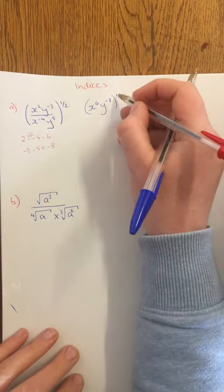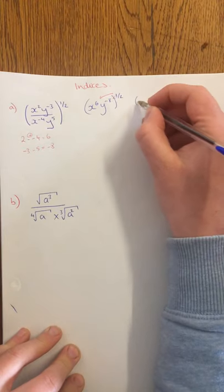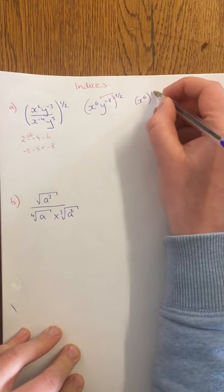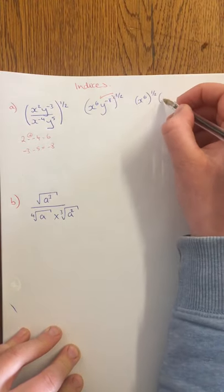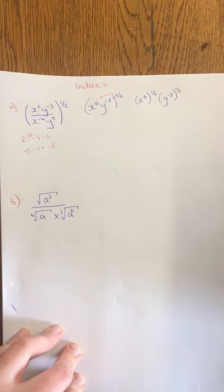So when you have a power to power, that goes on to everything inside the bracket. So it's going to be x to the 6 to the power of a half. And then we have our y to the minus 8 to the power of a half.